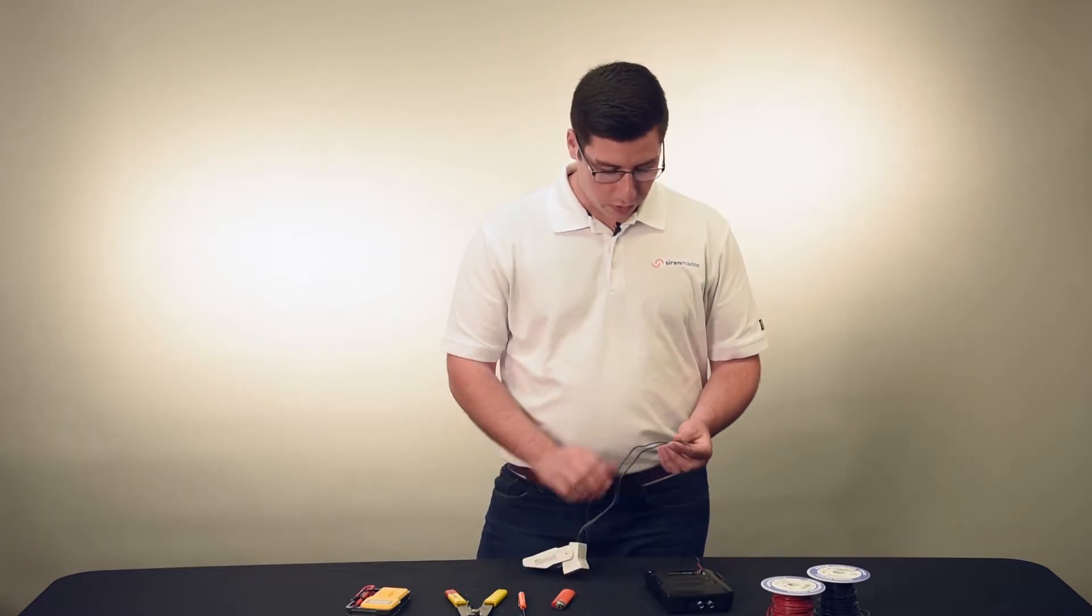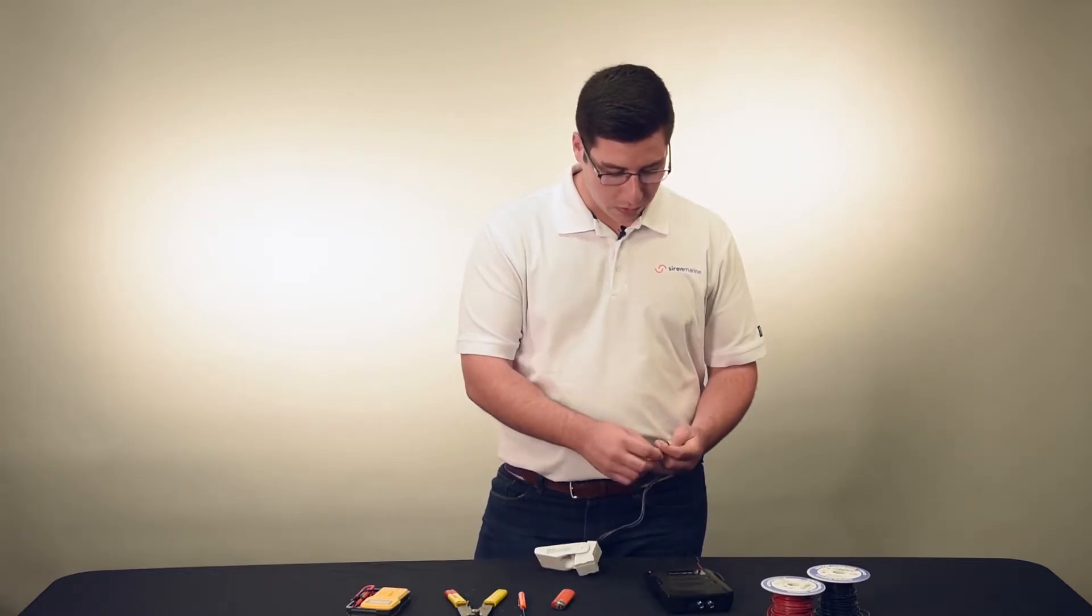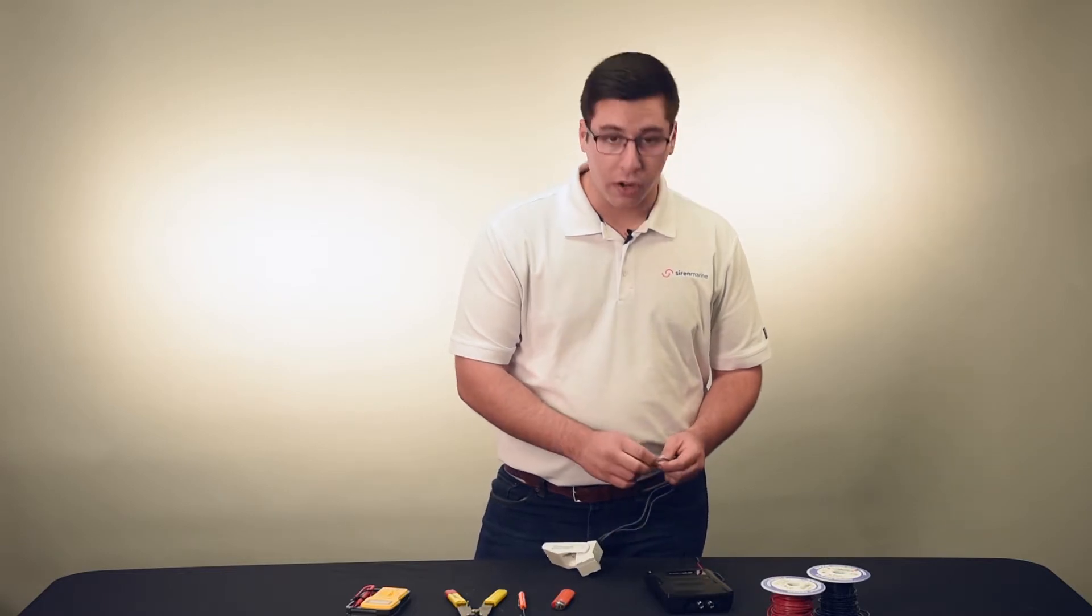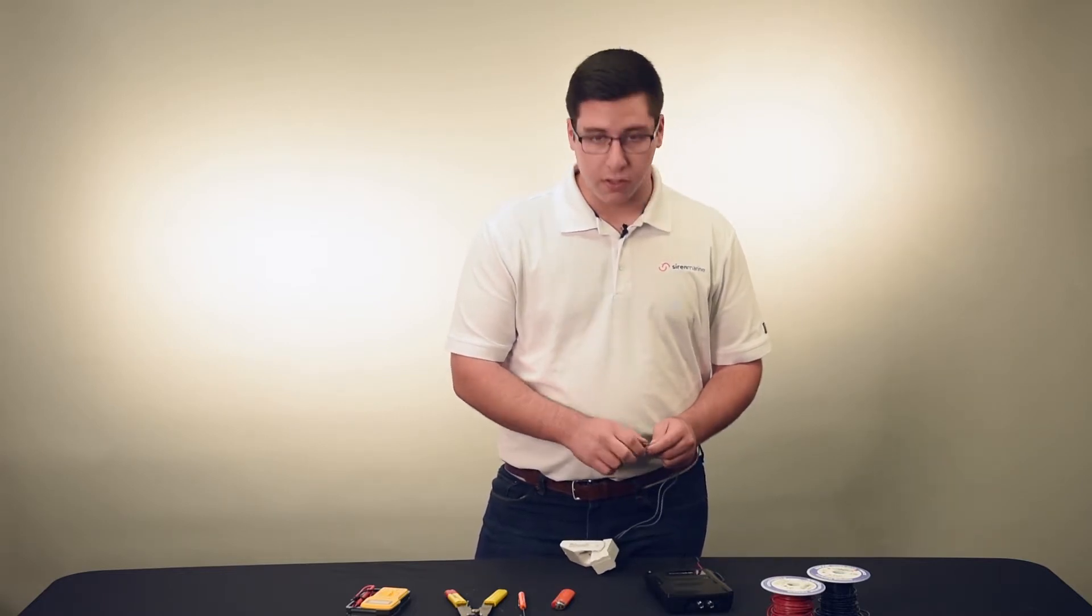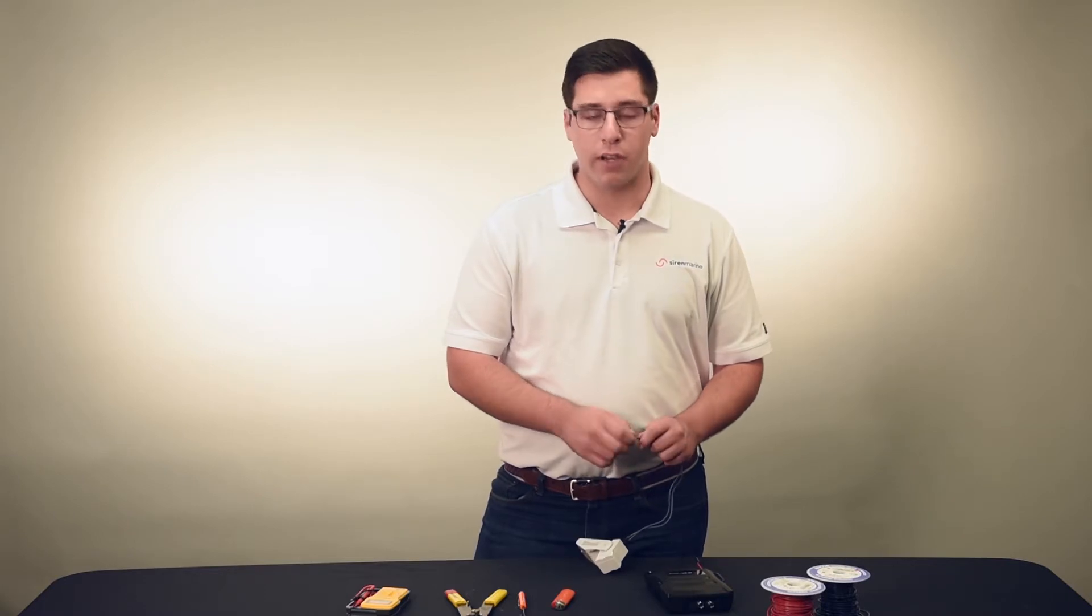Now this rule float switch, again there's no power here. So we're going to be connecting one side to the high water input on the device and the other just looping it into battery ground that the device is already connected to.